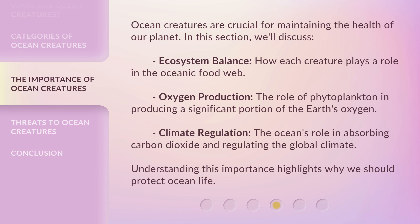Ocean creatures are crucial for maintaining the health of our planet. In this section, we'll discuss ecosystem balance — how each creature plays a role in the oceanic food web — oxygen production, the role of phytoplankton in producing a significant portion of the Earth's oxygen, and climate regulation, the ocean's role in absorbing carbon dioxide and regulating the global climate. Understanding this importance highlights why we should protect ocean life.